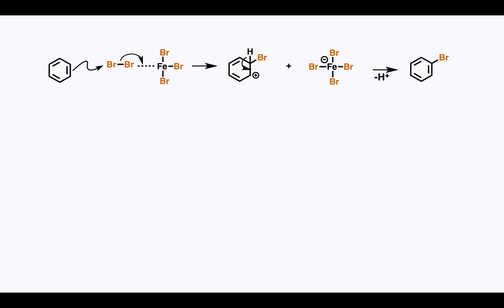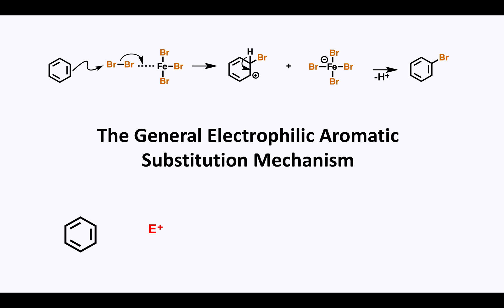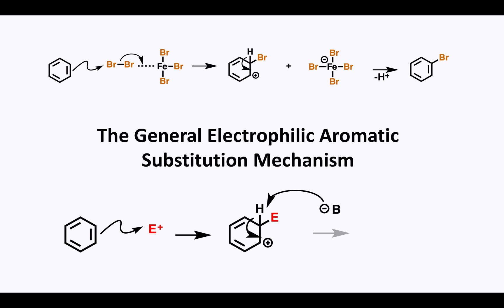This reaction is general, so anytime benzene encounters an electrophile that is powerful enough, it'll open up its double bond attacking it. We can then show the electrons pushing back into the ring, and if we have an appropriate conjugate base in solution, we can use that to do a deprotonation. This gives us our substituted aromatic ring.